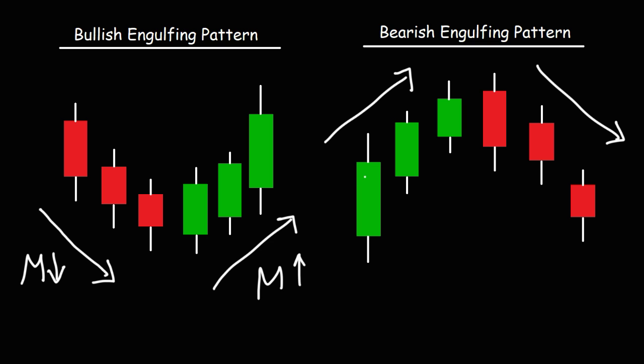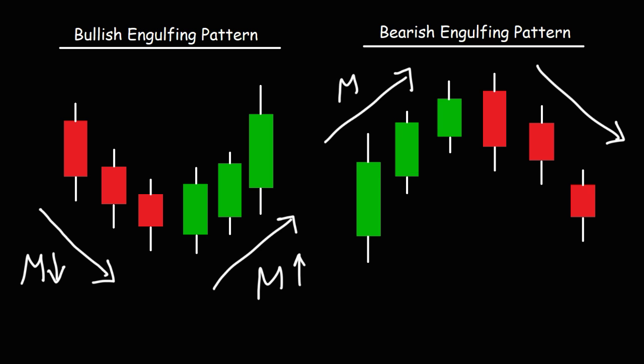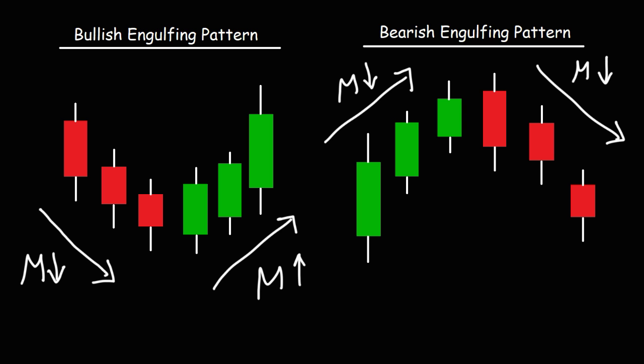For the bearish engulfing pattern, we can see the sizes of the bodies of those candles are getting smaller — therefore momentum is decreasing. The uptrend is about to come to a stop, potentially. Sometimes it can stall and then continue to go back up. On the right, the candles are getting smaller, so momentum is decreasing. Thus the strength of this reversal doesn't appear to be a strong one because momentum is decreasing as it goes from an uptrend and even into a downtrend. So this reversal pattern is not as strong as the other one.